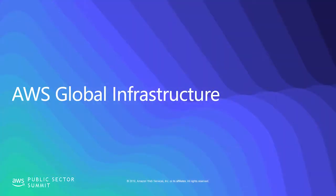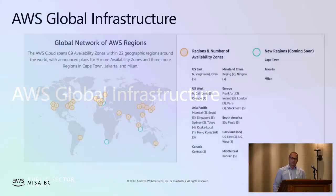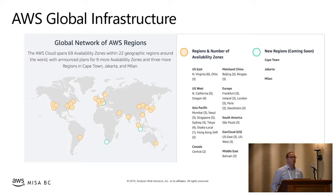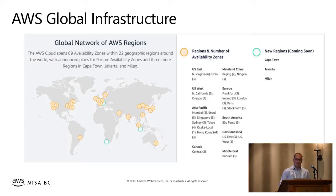Let's talk about our global infrastructure — it's unique among cloud providers. Today we have 69 availability zones across over 22 geographic regions. We define a region as a physical location around the world where we cluster data centers. On the map, the large circles represent our regions, with numbers indicating the number of availability zones inside each. The green circles represent upcoming announced regions to be launched. We're always continually building based on customer input.